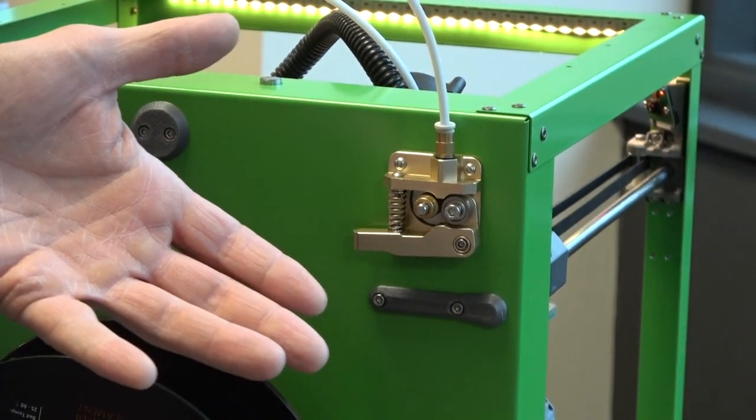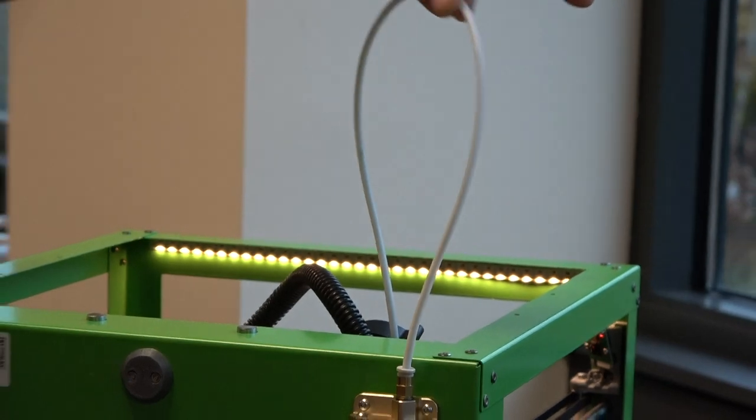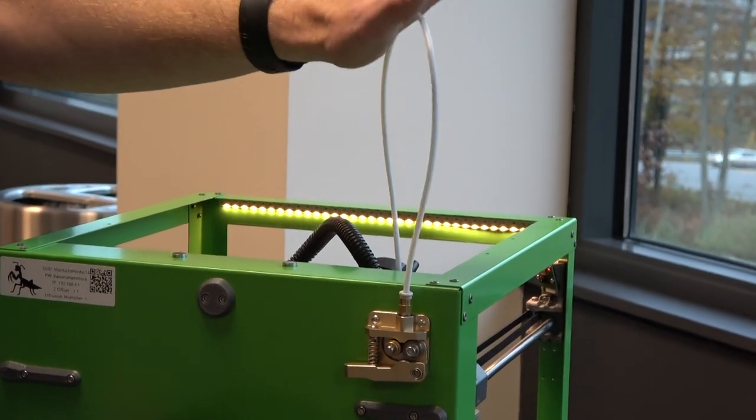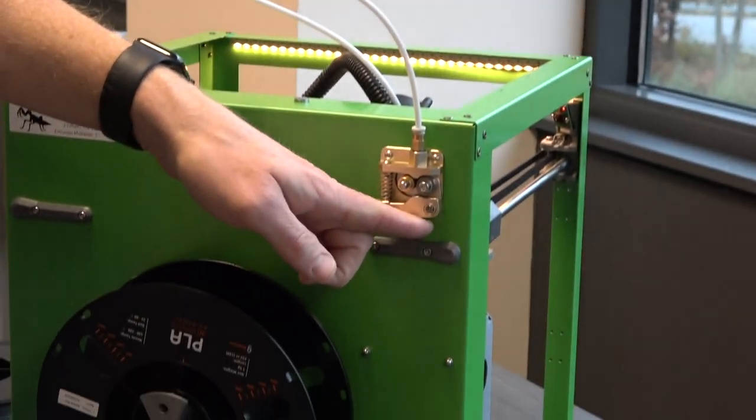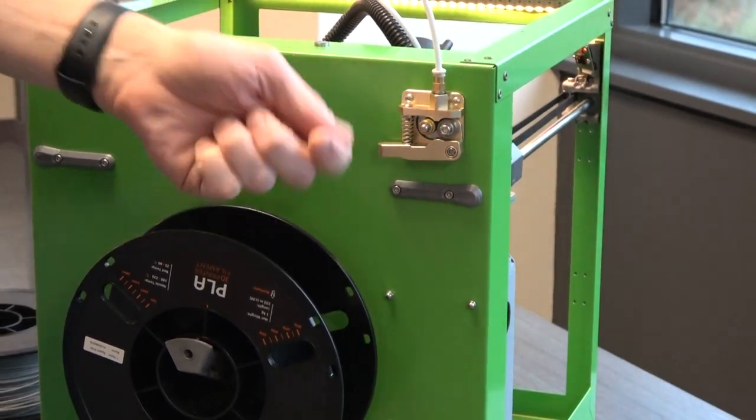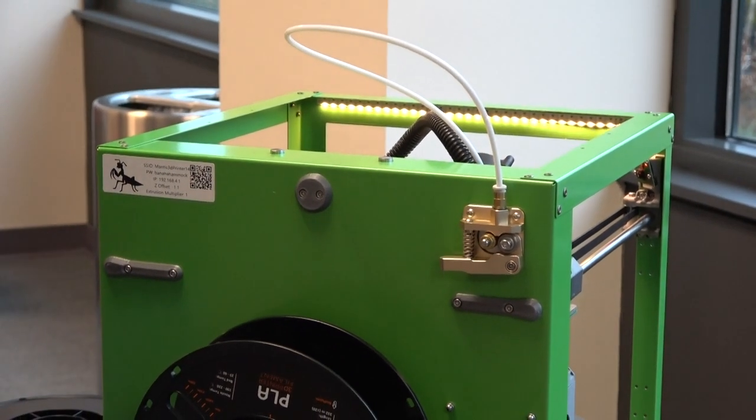You end up with a Bowden tube—this white tube here—full of filament, but you can't get it back out because there's nothing here to grab, and you can't push it through because there's nothing there to push.